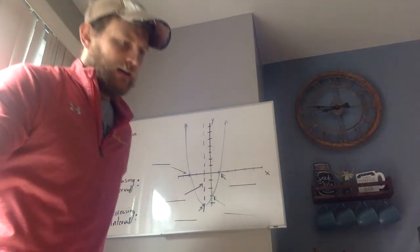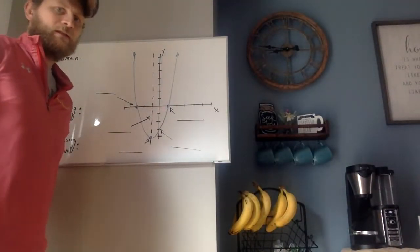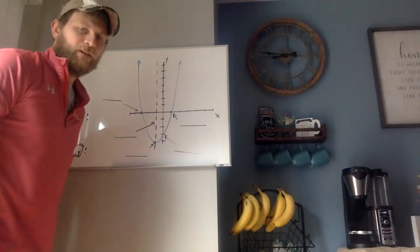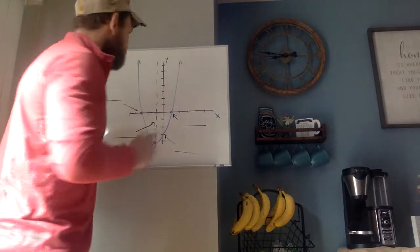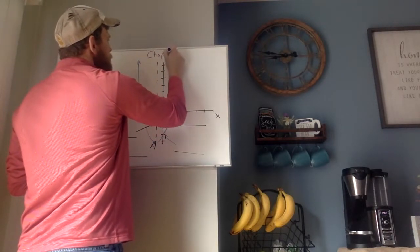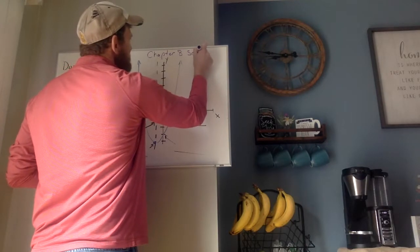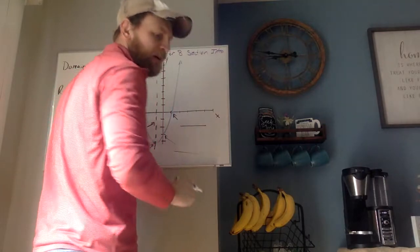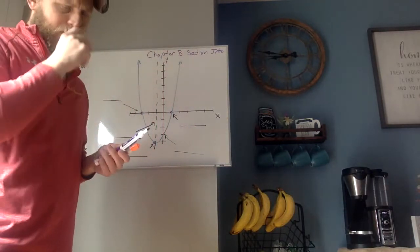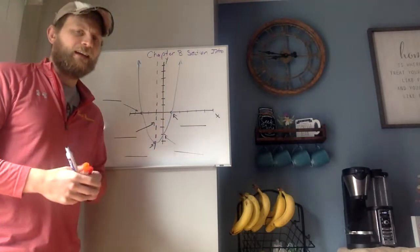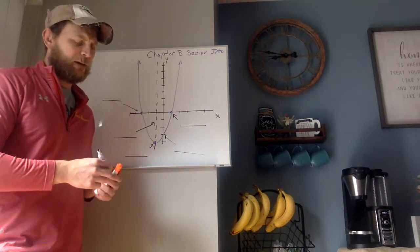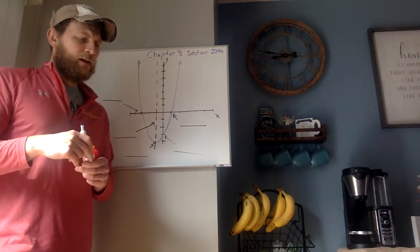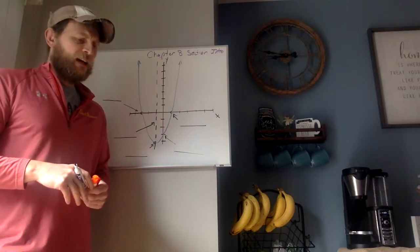All right, let's go over Chapter 8, Section 1 intro. You'll find that in the upper left-hand corner of your notes. What are you going to need for this chapter? You're going to need a graphing calculator, probably some graph paper, but most of all you're going to have to pay attention because this is all new stuff.